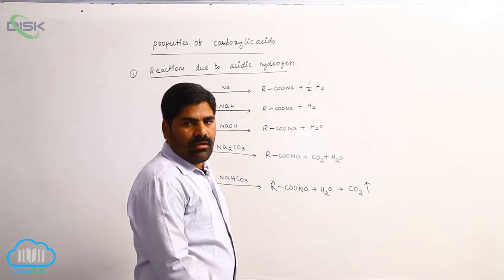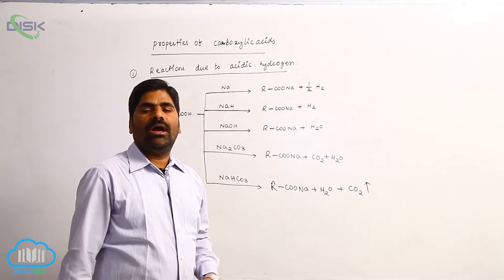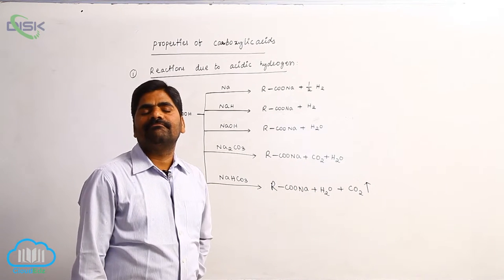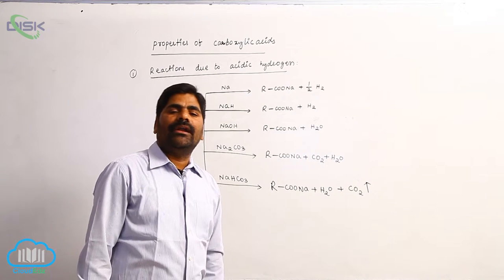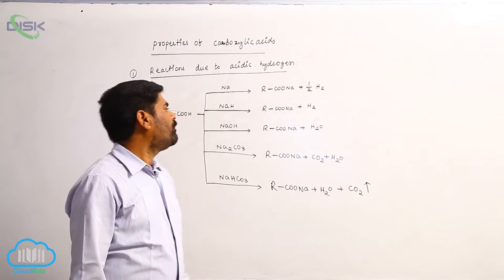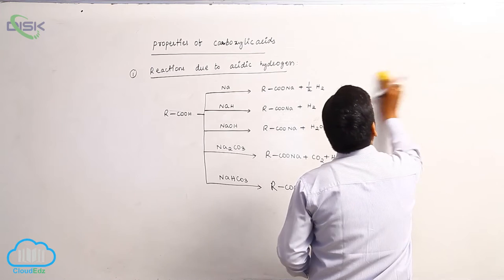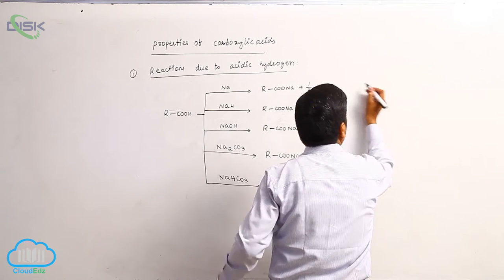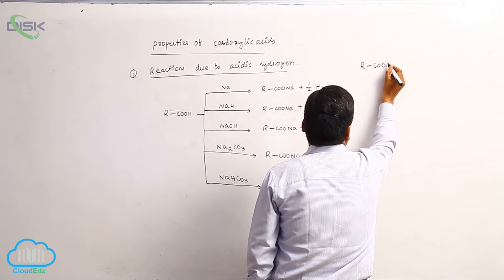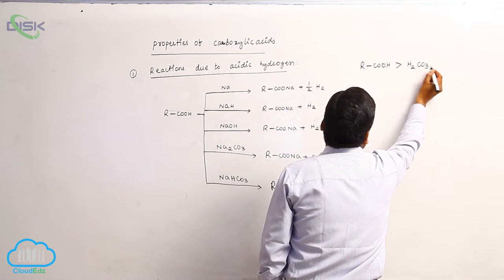Due to liberation of CO2 effervescence, carboxylic acids are identified and distinguished. Carboxylic acid is more acidic than carbonic acid.